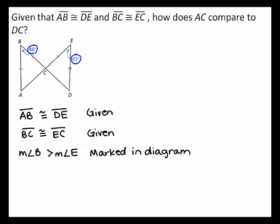Therefore, two sides of triangle ABC are congruent to two sides of triangle DEC and the included angle of triangle ABC is larger.